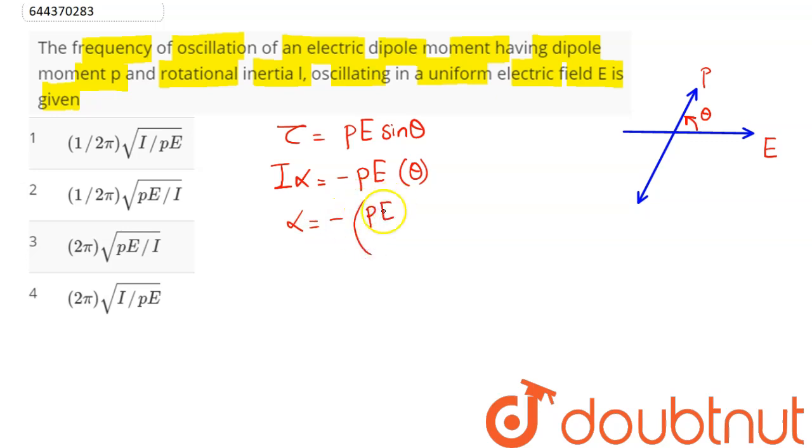minus pE divided by I times θ. Now comparing this with α = -ω²θ, we have ω as square root of pE divided by I.